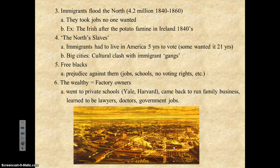Immigrants went to big cities like New York, Chicago, and Cleveland. The Irish came over fleeing the potato famine and developed areas called 'Little Ireland.' Groups like the Italians and the Irish would fight over who controlled areas of the city — almost like gang violence based on where they came from in Europe. Immigrants were called the 'North's slaves' and were treated badly. You had to wait five years in America to vote, and some wanted that to be 21 years.